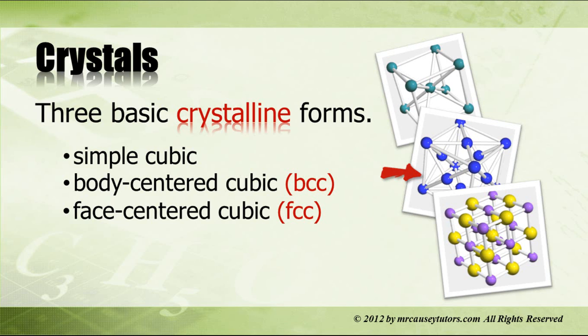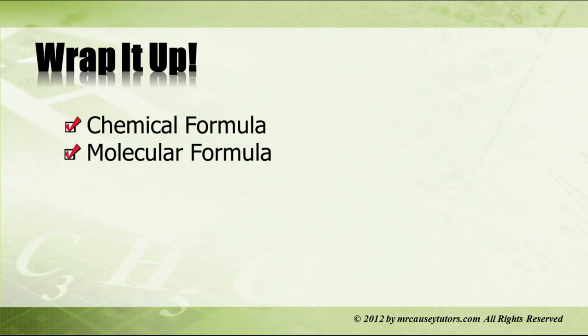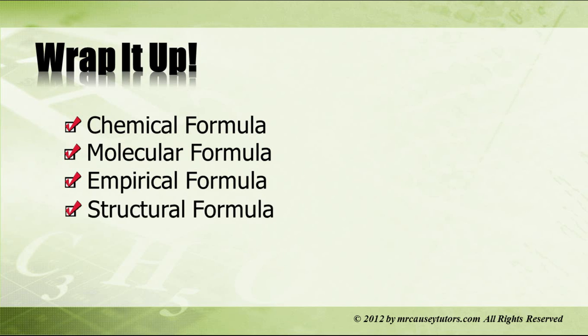So let's wrap it up. You've looked at the chemical formula and its anatomy. You've looked at a molecular formula, which applies to covalent compounds. Then we have the empirical formula, which is just the simplest ratio. Which, by the way, if you didn't notice, a formula unit is the empirical formula of ionic compounds. Then we have the structural formula, and formula units for ionic compounds.